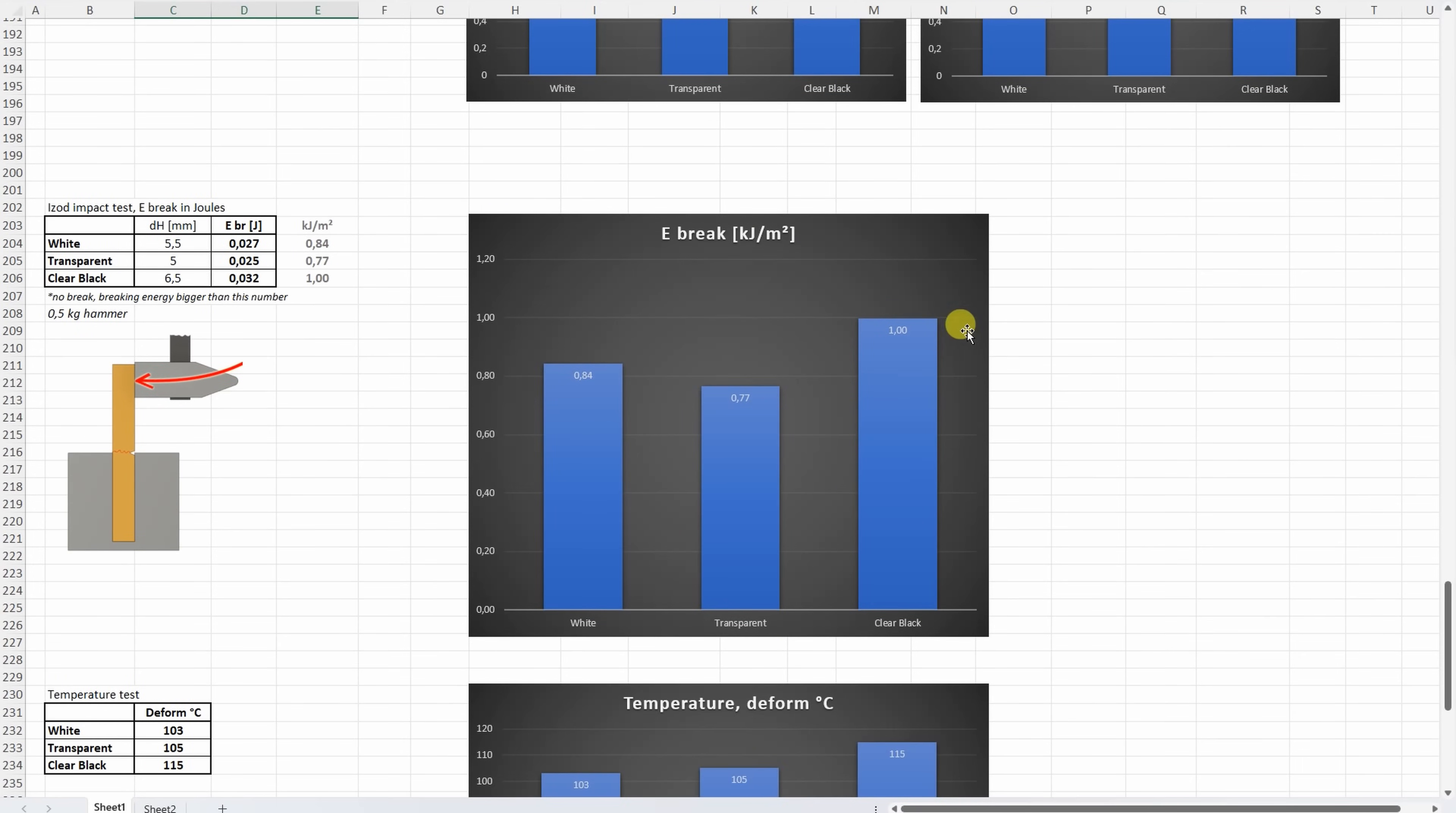On the Izod impact test, well, theoretically yes, the black is a little bit stronger, tougher material. But in all three cases, this is extremely brittle material compared to the ABS or any other material actually. So this may be the only reason why we would like to choose the ABS instead of the polycarbonate.